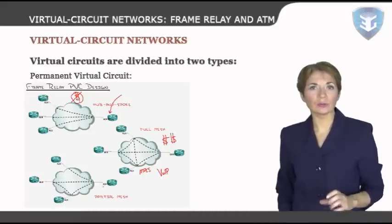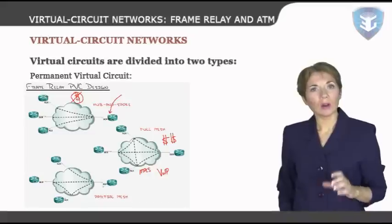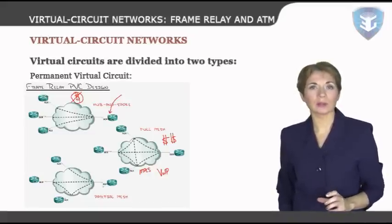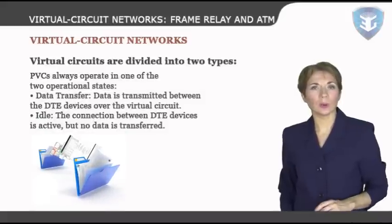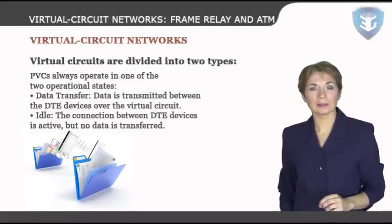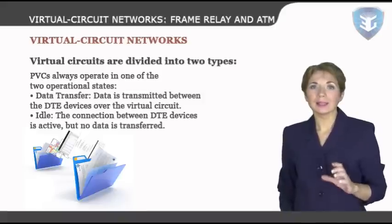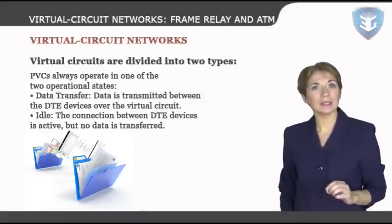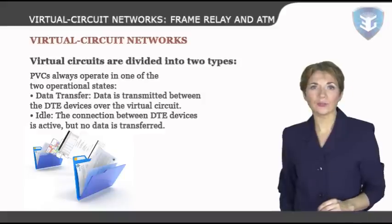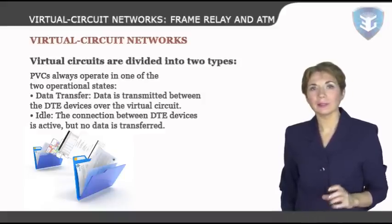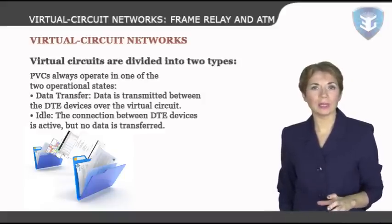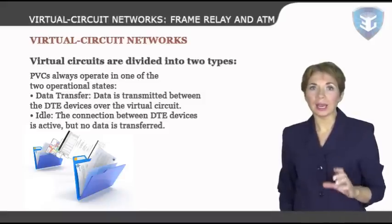A permanent virtual circuit, or PVC, is a virtual circuit that is permanently available. The only difference between PVC and a switched virtual circuit, or SVC, is that an SVC must be re-established each time data is to be sent. Once the data has been sent, the SVC disappears. PVCs are more efficient for connections between hosts that communicate frequently. PVCs play a central role in frame relay networks and are also supported in other types of networks such as X.25. PVCs always operate in one of two states: data transfer or idle. Unlike SVCs, PVCs are not terminated if they are in an idle state.